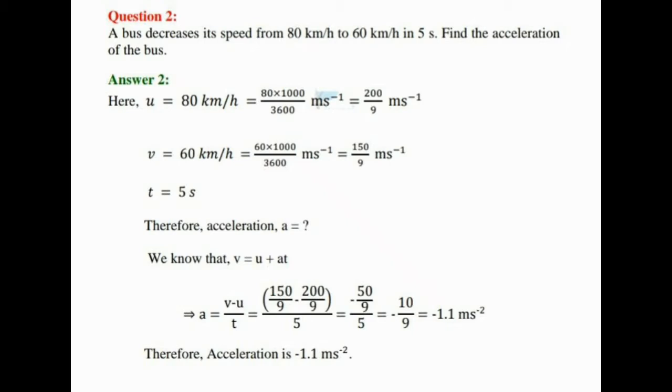v is equal to 60 km per hour, which will equal to 60 into 1000 divided by 3600 meter per second minus 1, which will equal to 150 by 9 meter per second minus 1. We have to change km per hour into meter per second.